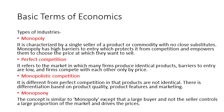Now we will look at the types of industries. The first is monopoly — it is characterized by a single seller of a product or commodity with no close substitute. Monopoly has high barriers to entry, which protects from competitors and empowers the seller to choose the price. Then we have perfect competition — it refers to a market in which many firms produce identical products, barriers to entry are low, and firms compete only by price.